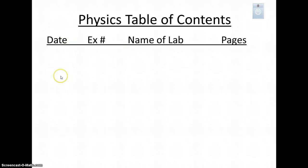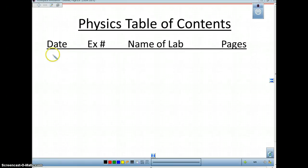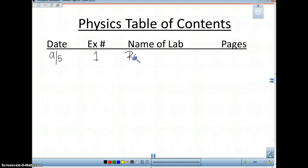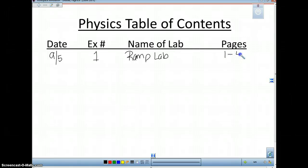The date is going to be the date at which you complete your lab. Your first lab will be tomorrow. If you were absent or not present during the lab, put the date that you did the lab — this is about what you did and your organization. This is going to be experiment number one, and the name of the lab is the RAMP lab for your AP Physics. We'll try to keep them simple.